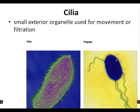Cilia — these are small exterior organelles used for movement or filtration. You can see two microorganisms here — this one is covered with cilia, which it uses like little swimming things. You actually have some cells with cilia on them, but not for swimming. Instead, they're on the cells of your trachea, commonly referred to as the windpipe. The tiny cilia lining the exterior of those cells act like a filter, filtering all the air that you're breathing — which is pretty crucial for the not-dying stuff.